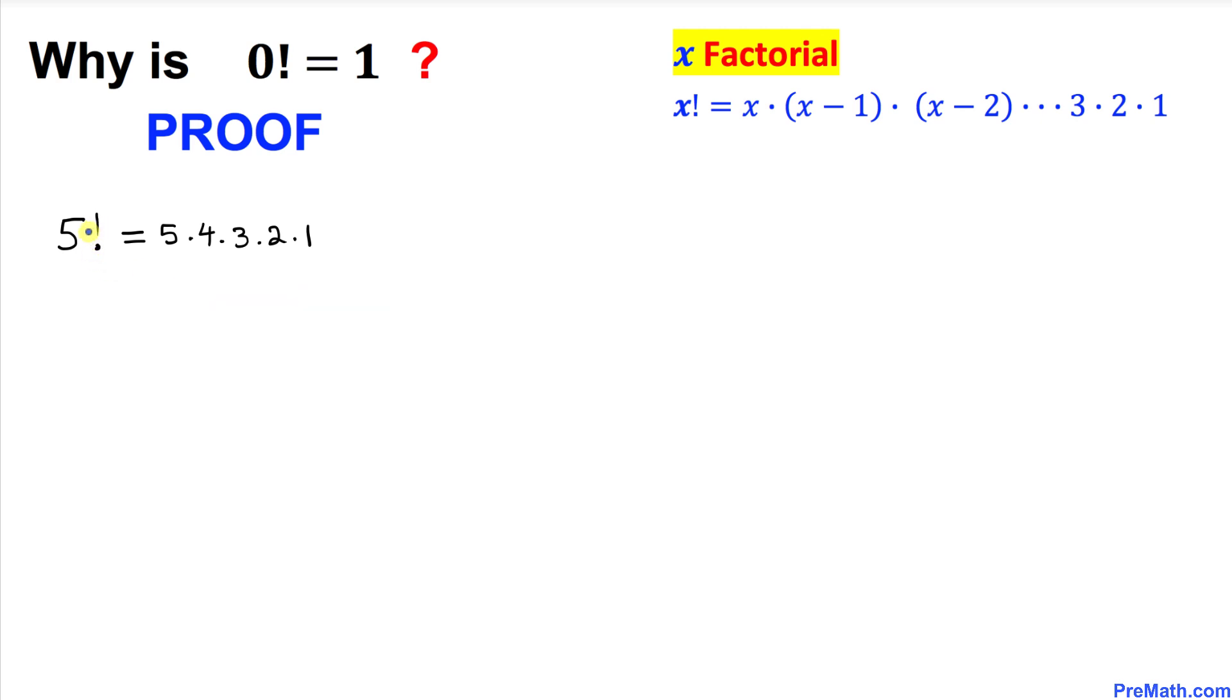Let me go ahead and manipulate this one. So 5 factorial could be written as I can write this 5 right here equal to 5 times this part over here could also be written as times 4 factorial. Isn't it? Let me give you one more example.